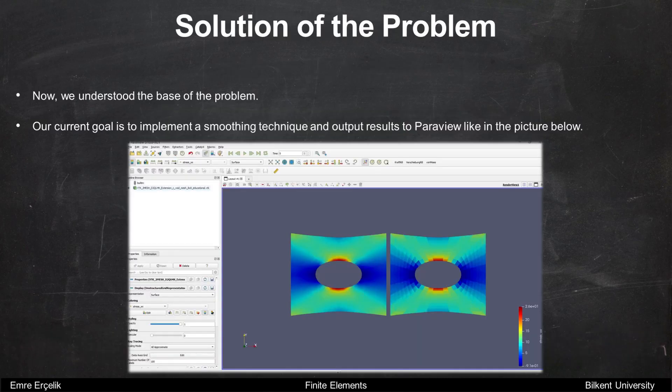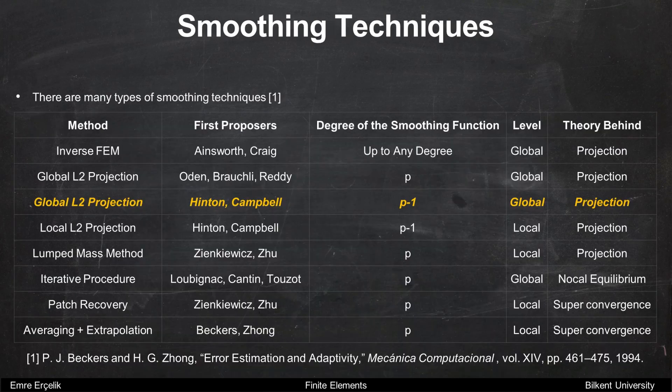Now we understood the base of the problem. Our current goal is to implement a smoothing technique and output results to Paraview like in the picture below. As you can see there are many types of smoothing techniques but we will only implement the technique highlighted with orange italic font.